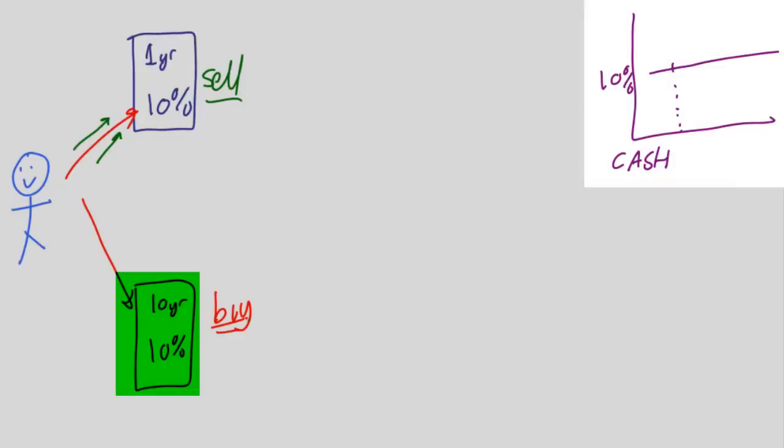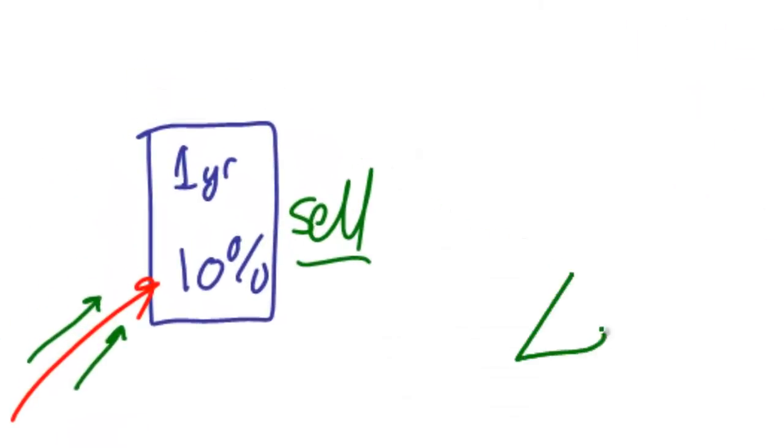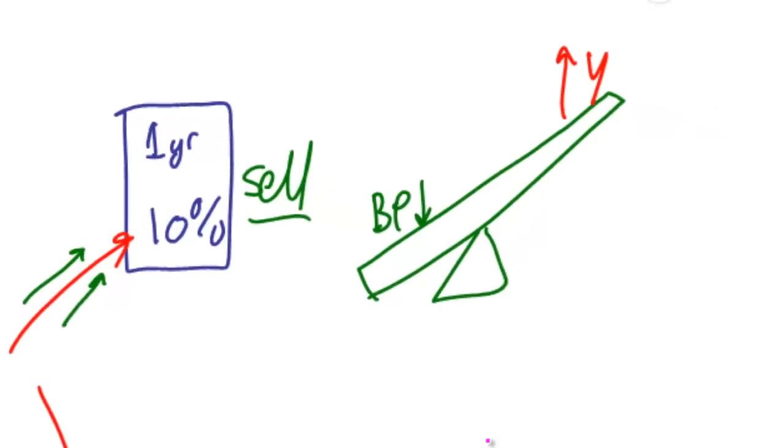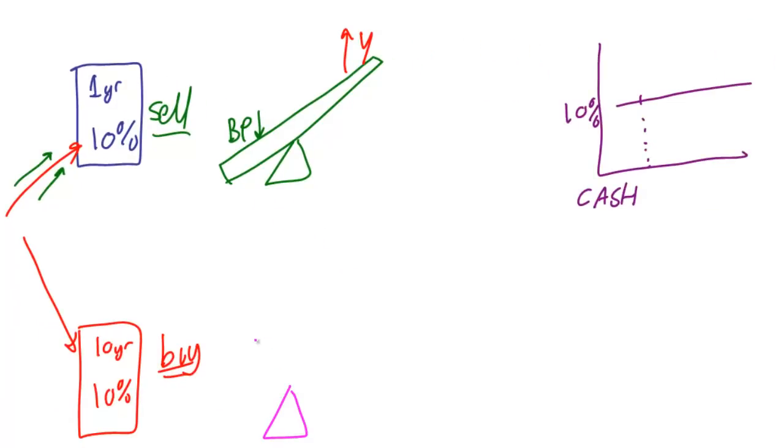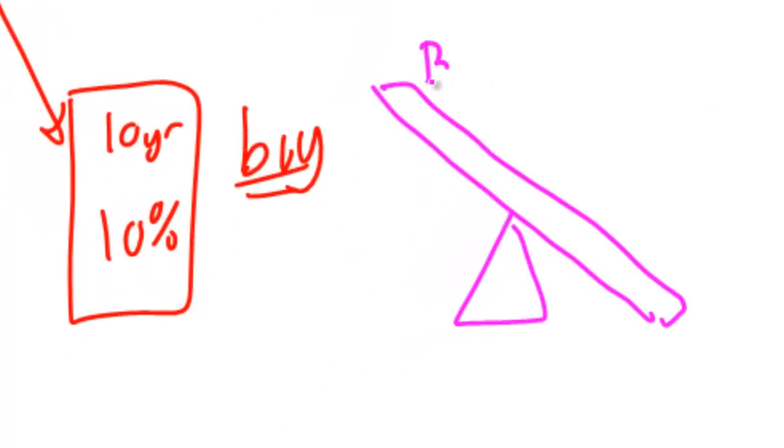What's going to happen to the yield curve at this point? We need to draw a couple of seesaws. Here's the first seesaw. If bond prices come down, that means yields must go up. And the complementary seesaw: if bond prices go up, then yields must come down. Mathematically, that has to happen.